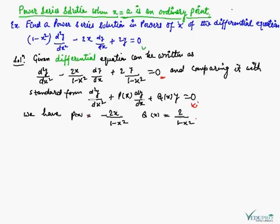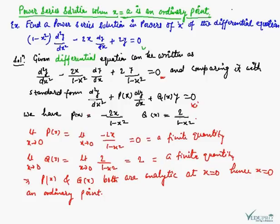We have P(x) = -2x/(1 - x²) and Q(x) = 2/(1 - x²). If we take the limit as x tends to 0 of P(x), it comes to 0, which is a finite quantity. If we take the limit as x tends to 0 of Q(x), this value comes to 2, which is also a finite quantity. Since both are finite, P(x) and Q(x) are both analytic at x = 0, and hence x = 0 is an ordinary point.